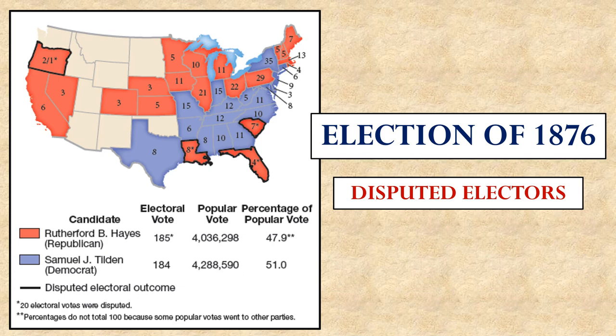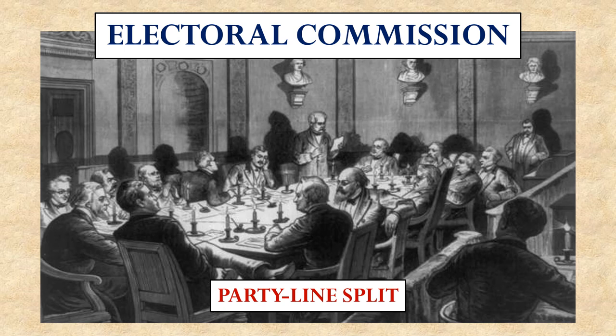To resolve the disputed election, they formed an electoral commission to analyze the facts and determine the real winner. The problem was the commission was composed of partisans — eight Republicans and seven Democrats. When it came time to vote, they voted for their own party's candidate, so Hayes narrowly won. Democrats claimed fraud, saying the commission never looked at the facts and it was all politics.